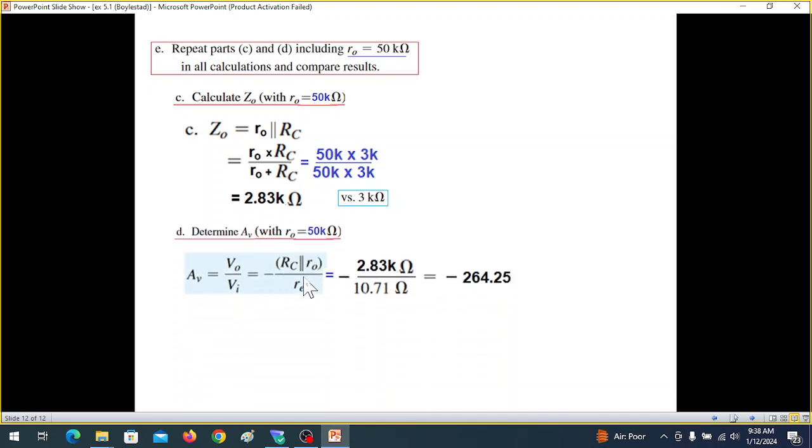Similarly the gain part, same, this was the formula we solved. And RC RO now in this case is 2.83, so we'll plug that here. RE we know, so the gain is now negative 264.25 instead of negative 280. So this gain has also reduced because of the finite value of RO. I hope you have been able to follow this. Please let me know through your comments. Thank you and share it with your friends.